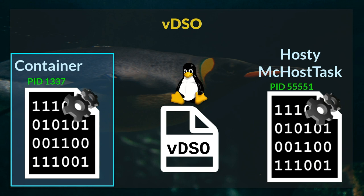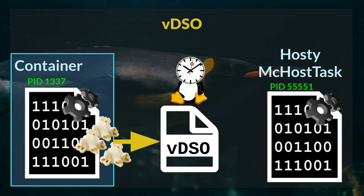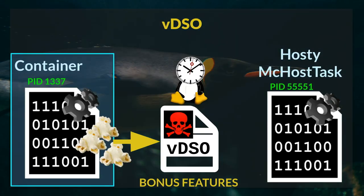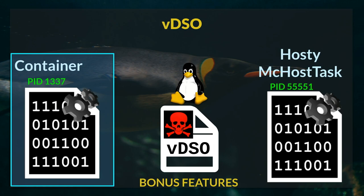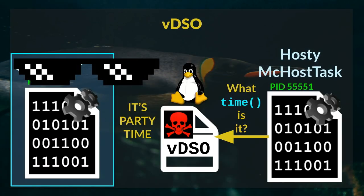On the left we have a container running in its own namespace and isolated, and on the right we have a privileged task running in the host. Despite having separate virtual address spaces and the container having namespaces, when they look up at the sky, they see the same VDSO. This means the container process can exploit DirtyCow to modify the VDSO mapping and add some totally sweet new bonus features to it. And everyone else who has the VDSO mapping — which is every other task, including the host task — will include these sweet new bonus features. So when the host task asks what time it is, it's party time.